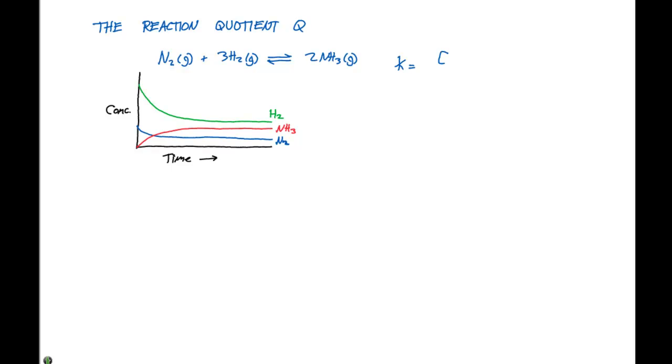it would be the concentration of NH3, that quantity squared, divided by the concentration of N2 divided by the concentration of H2 to the third power. And all of these concentrations are equilibrium concentrations.